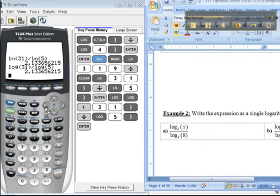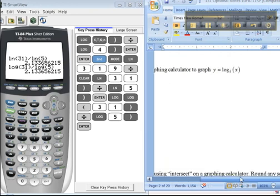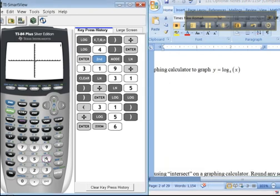Now, back to this question that they wanted us to do from the optional notes, graphing this, right? So, they want us to graph that. So, you do zoom 6, and there you can see it, right? I typed it in here.